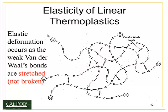So it's important to think about where elastic deformation comes from in polymers. It occurs by the stretching of weak van der Waals bonds, not breaking those bonds and sliding the chains past each other — that would be plastic or permanent deformation. So elastic deformation is only caused by stretching the weak van der Waals bonds.